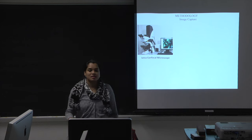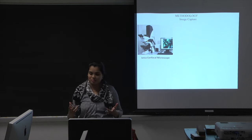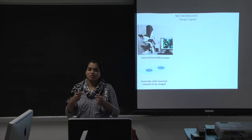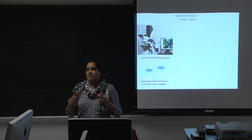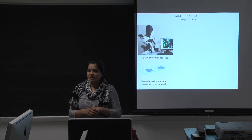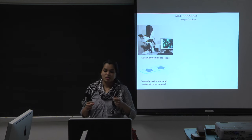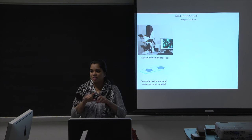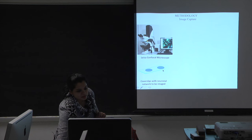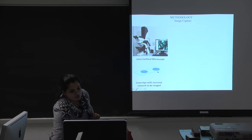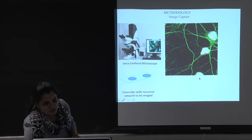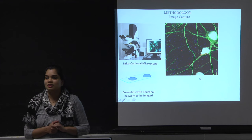I used a Leica confocal microscope to capture these images. The networks are basically dissociated hippocampal neurons from a rat. These were fixed and stained on cover slips. These two circles represent the two cover slips on the microscope slide, so when you put this slide under the microscope, you would capture images like these.